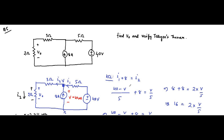So here we have completed the fifth question. We verified Tellegen's theorem and also found the voltage drop across the 2Ω resistor as required by the extra part of the question.